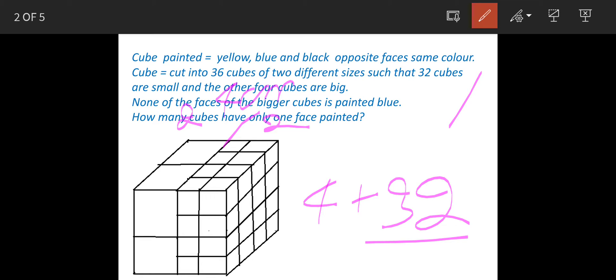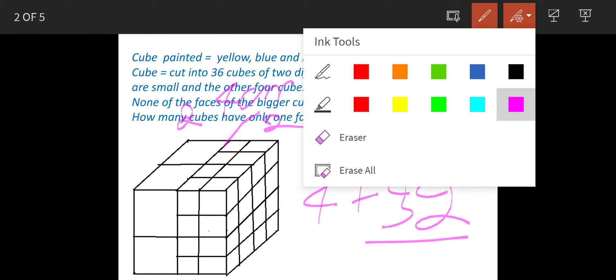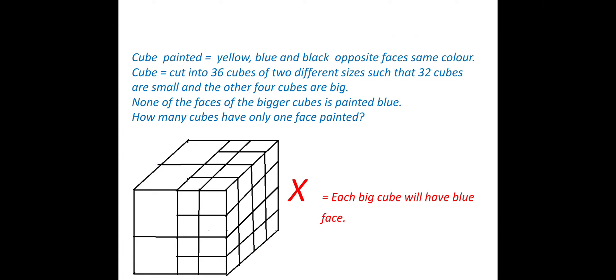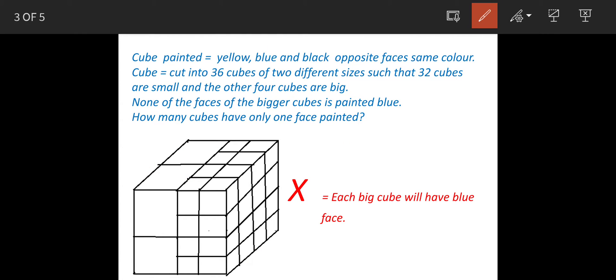But the problem here is that either way you paint, the bigger cube will always have a blue face. Suppose that we put blue here and blue will come on the opposite side, so that means these faces and the faces which are on the opposite side will have blue color. So it is not meeting this condition.